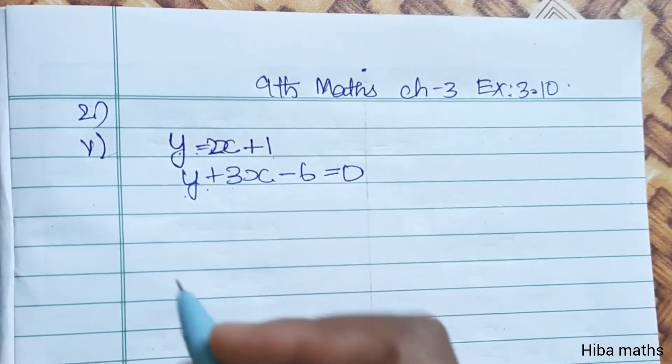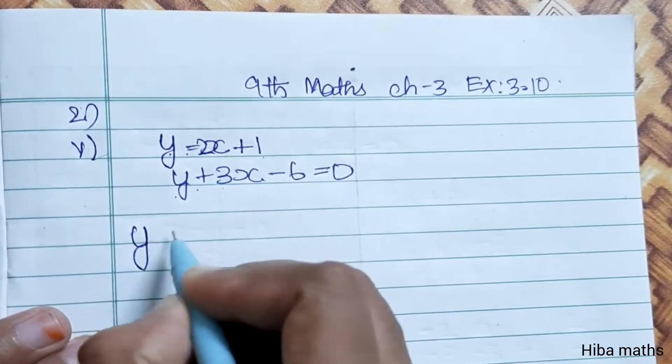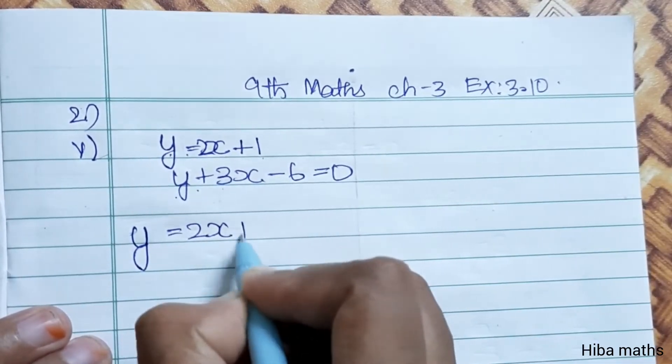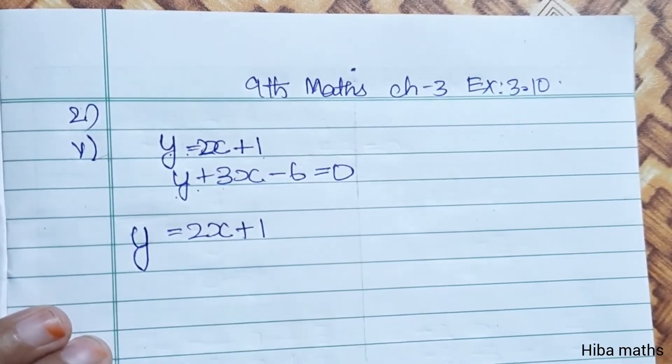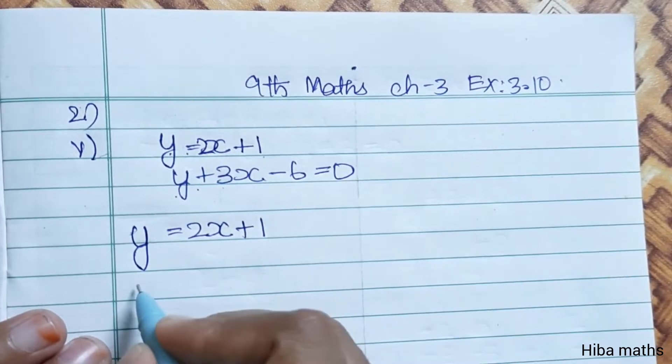Let's take Line 1 first. Line 1: y is equal to 2x plus 1. Let's take two lines and work out the points for Line 1.